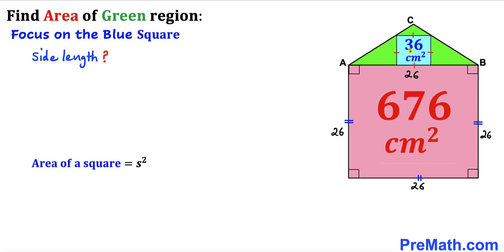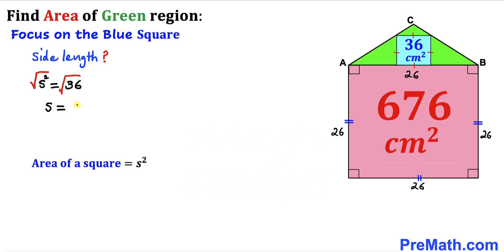Now let's focus on the blue square whose area is 36 cm² and calculate its side length. Using the area of a square formula again: s² = 36. Taking the square root on both sides, the side length s turns out to be 6 cm. So the side length of the blue square is 6 cm.